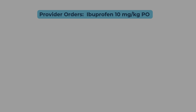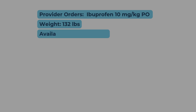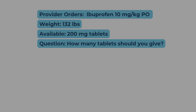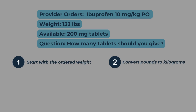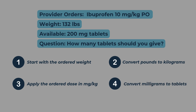Now it's your turn to apply everything you've learned. The provider orders ibuprofen 10 milligrams per kilogram by mouth for a 132-pound patient. What you have on hand is 200-milligram tablets. Use the four-step dimensional analysis method: start with the ordered weight, convert pounds to kilograms, apply the ordered dose in milligrams per kilogram, then convert milligrams to tablets. Pause this video and solve it on your own — then we'll walk through the full setup and final answer on the next slide.